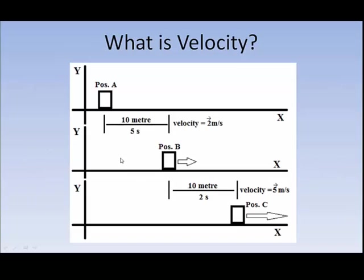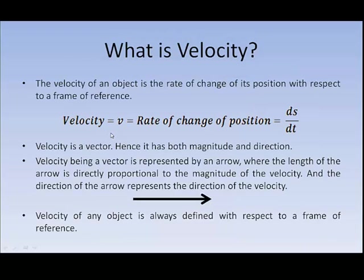In most cases, our frame of reference is the earth — our XY axis is fixed to the earth itself. As the earth moves, our XY axis moves. But it is possible, as we will see, that the frame of reference can be different; it is not necessary that the frame of reference should always be earth. So just to recap: velocity is the rate of change of position with respect to a frame of reference.